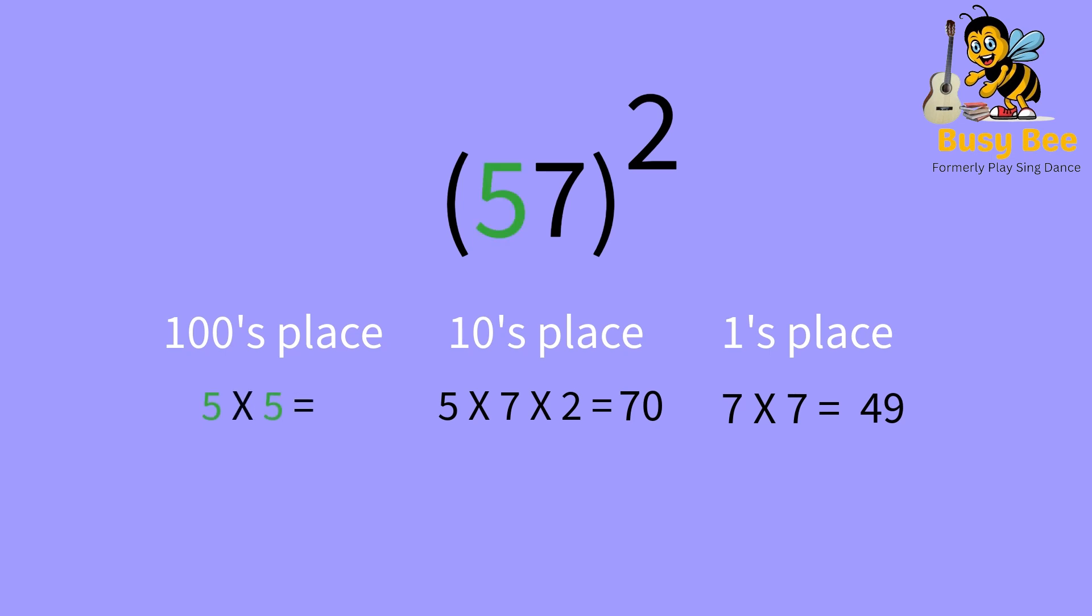The next step is to take the tens place number and multiply it by itself, which is 5 times 5, which is 25.